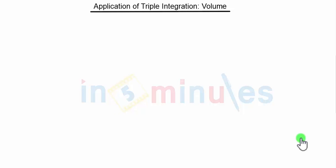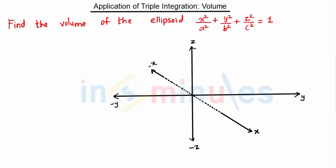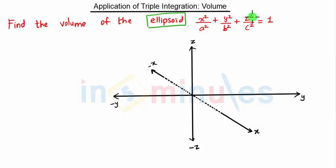Hello everyone, welcome to 'In 5 Minutes'. In this video we are going to see the next problem on application of triple integration. The question is: find the volume of the ellipsoid x²/a² + y²/b² + z²/c² = 1.